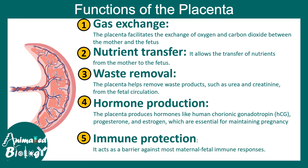Other than human chorionic gonadotropin, the placenta also produces progesterone and estrogen, which are required for maintenance of the pregnancy. Placenta also has an immune protection function — it prevents bacteria, harmful organisms, and most viruses from entering the fetal circulation. Sometimes this barrier is breached and viruses can affect the fetus during pregnancy, which is a serious condition. That is why avoiding viral infection during pregnancy is a big concern. Additionally, placenta allows antibodies to cross from the maternal side to the fetal side.